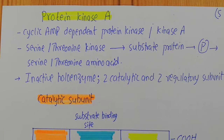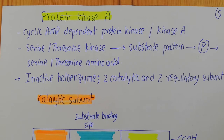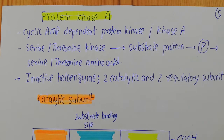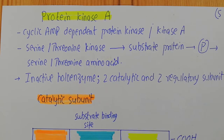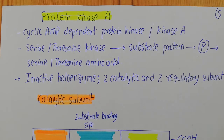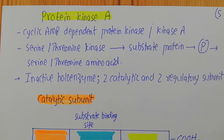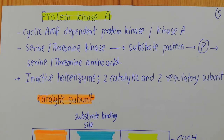Welcome back to this next video - this is the fourth video in the series on the protein kinase A pathway. In the last video, I told you that when the ligand, epinephrine, binds to its receptors, it causes a conformational change in the interior part of the receptor, converting it into a guanine nucleotide exchange factor. The receptor is in connection with the G protein, so the interior of the receptor replaces the GDP attached to the alpha subunit of the G protein with a GTP, thereby activating the alpha subunit of the heterotrimeric G protein.